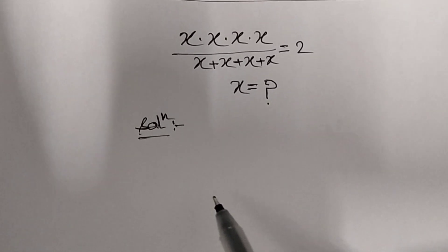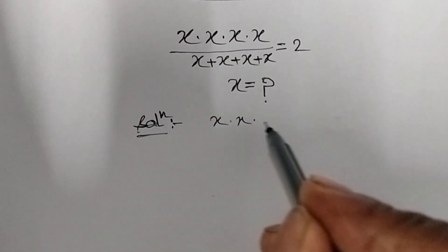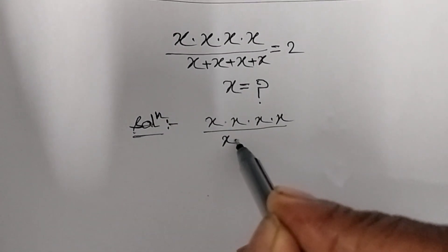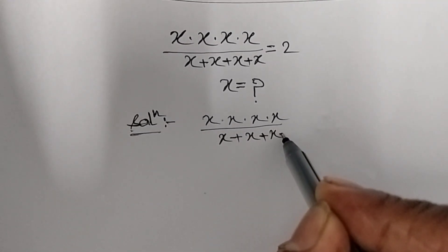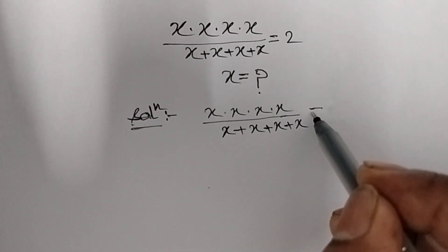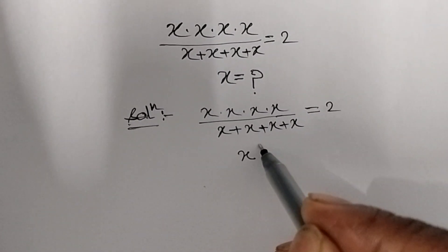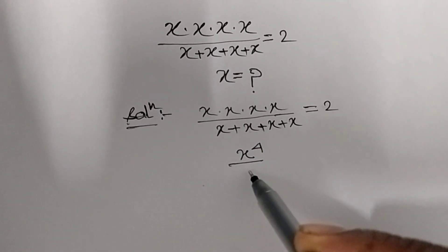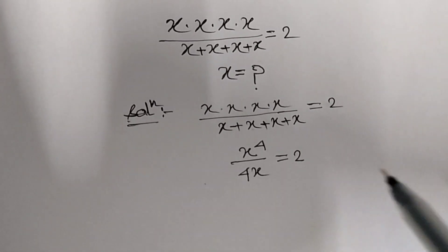First of all, we write the given question: x times x times x times x upon x plus x plus x plus x equal to 2. Now x times x times x times x is x to the power 4, upon x plus x plus x plus x is 4x, equal to 2.